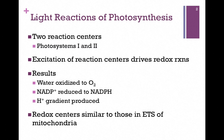In the light reactions of photosynthesis, there are actually two reaction centers, Photosystems I and II, though the process begins at Photosystem II. Excitation of reaction center chlorophylls drives a series of redox reactions. The results are that water becomes oxidized to oxygen gas, we reduce NADP+ to NADPH, and a proton gradient is produced in the process. The reaction centers in these complexes are similar to the ones we saw in the electron transport system of mitochondria.